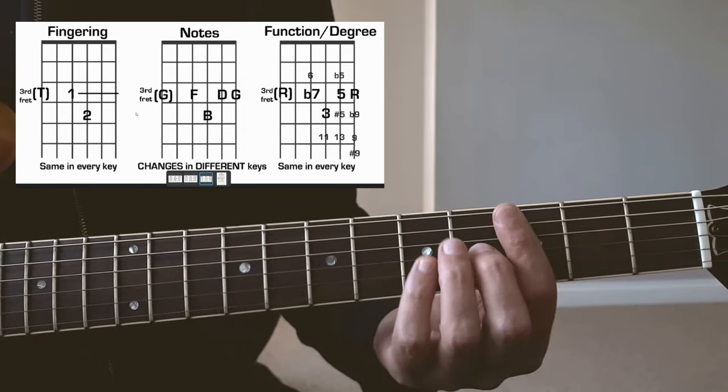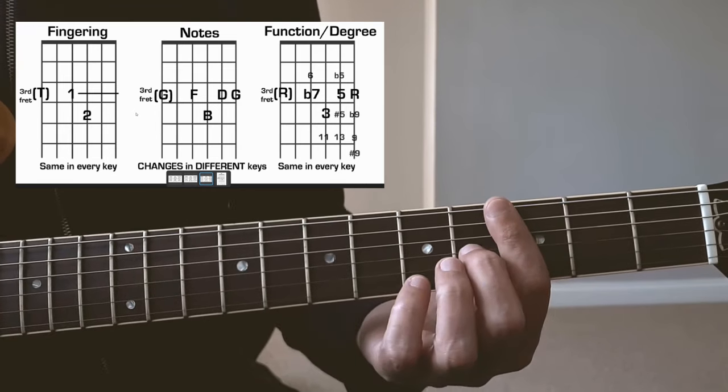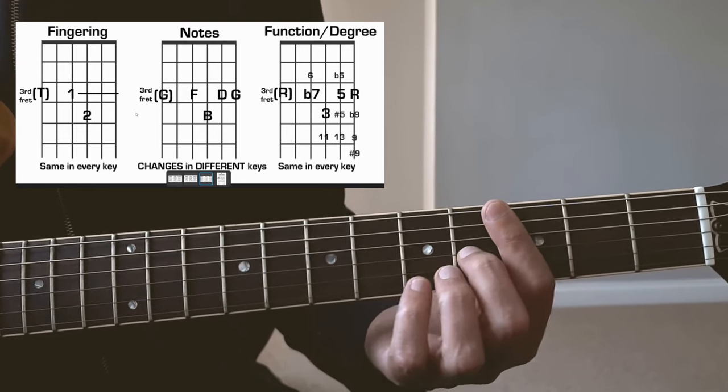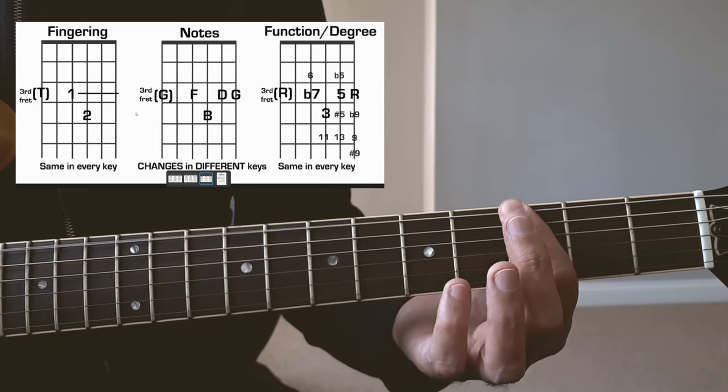This is now where we can use all the information that we've seen in the previous slides. Because now if we can organize the notes by degree or function, now I say that that's my root, flat seven, third, fifth, and root.